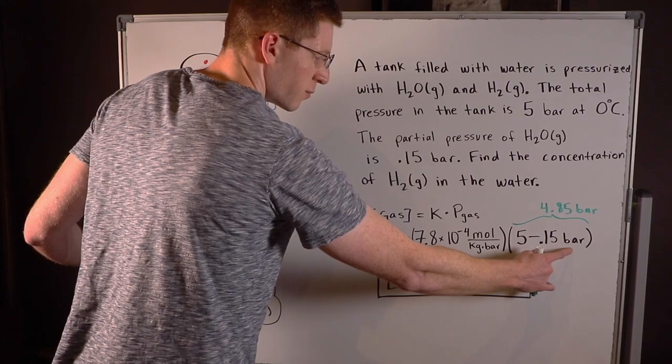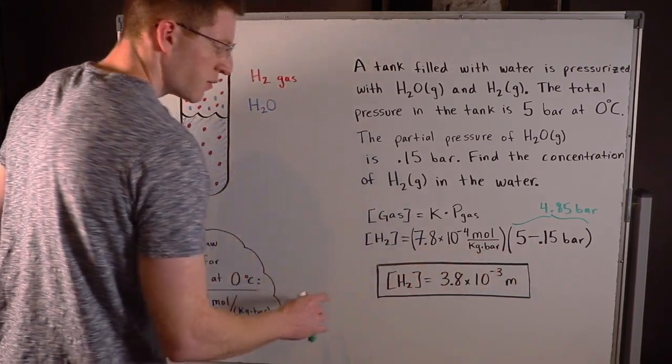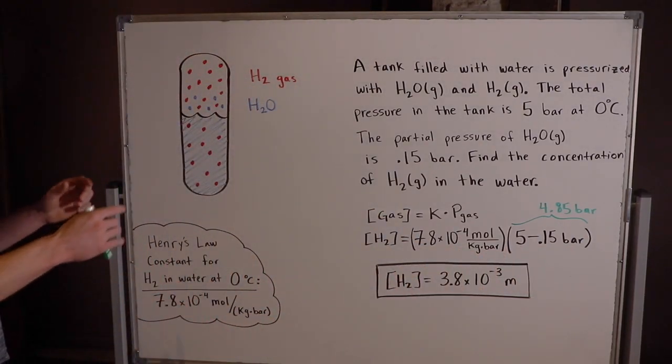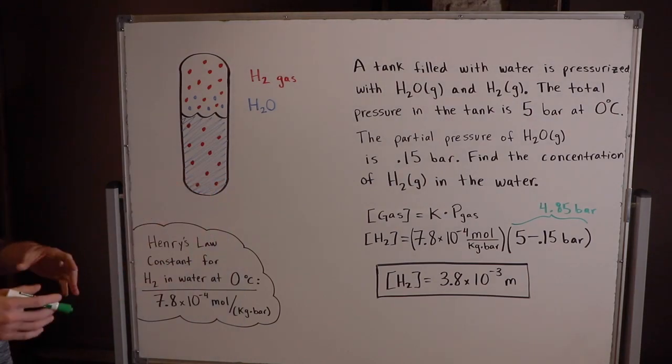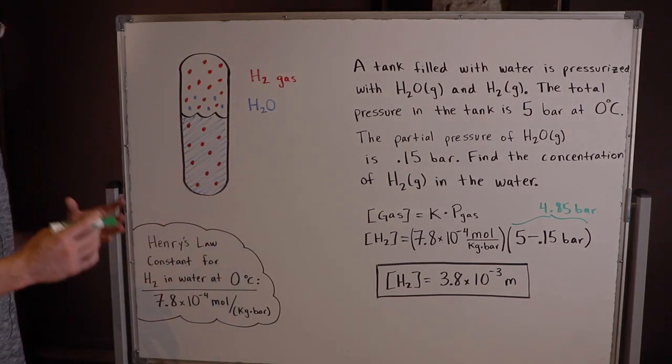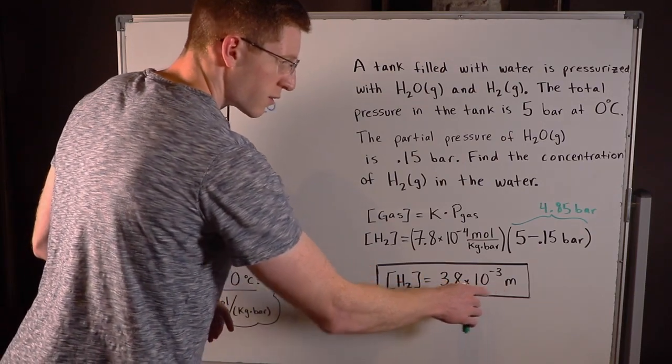So really you put 4.85 bar in for here and then you find the concentration of H2 gas in this water dissolved in the water is 3.8 times 10 to the negative 3 molal. Notice we end up in units of molality.